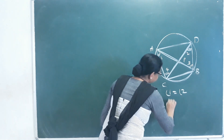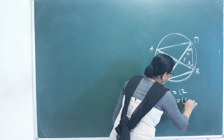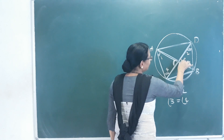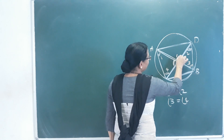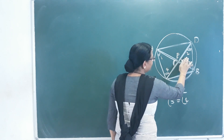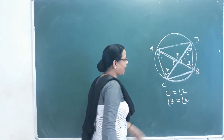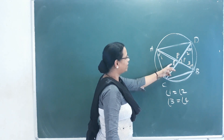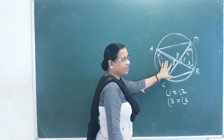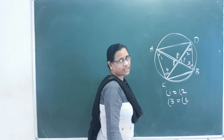Then we will see that angle 3 is equal to angle 4. Look at this — this is vertically opposite. This angle at point P: since vertically opposite angles are equal, these two triangles are considered similar triangles.